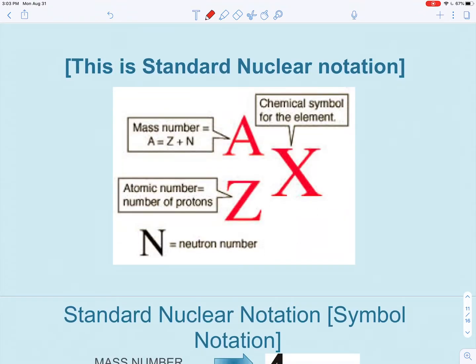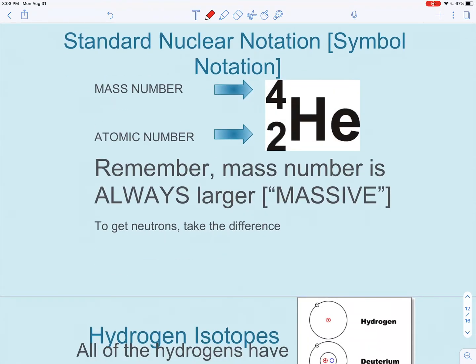This is one way in which we write our isotopes. We would write our symbol here, in this case a giant X. The mass number goes on top and the atomic number goes on the bottom. Remember to get neutrons, we can just subtract those two numbers. Mass number on top, atomic number on the bottom. This is also known as our standard nuclear notation. One way to remember this: the mass number is always going to be bigger. Think of the word massive, which means big.